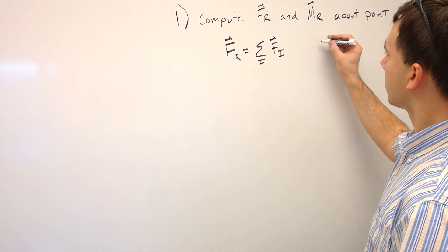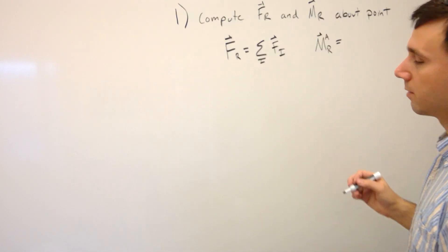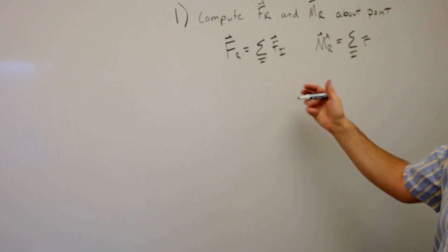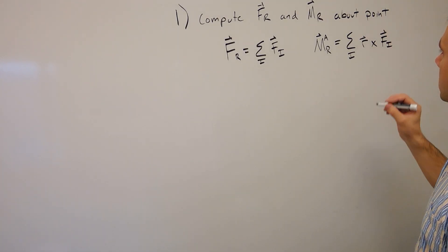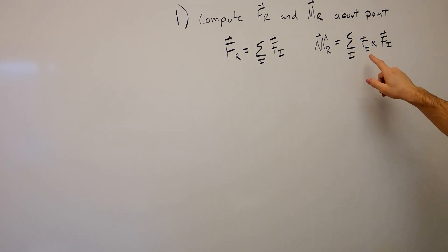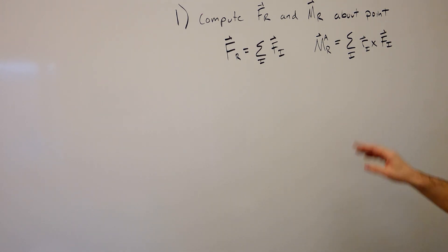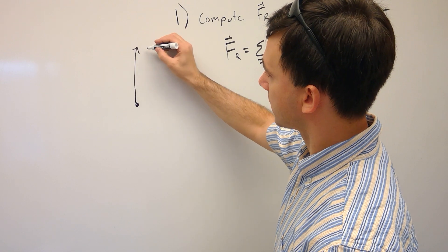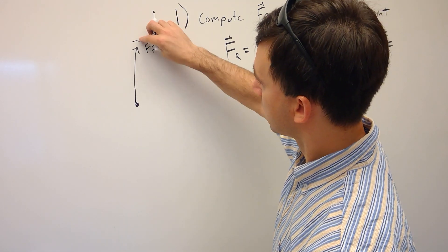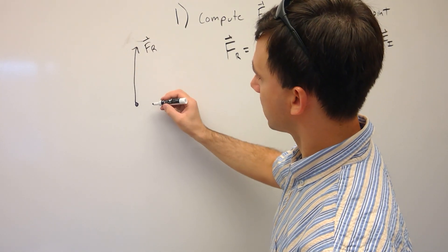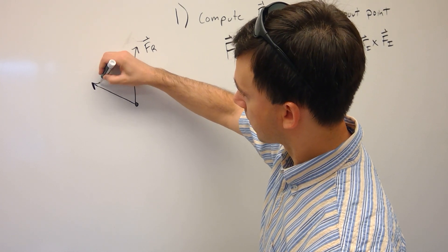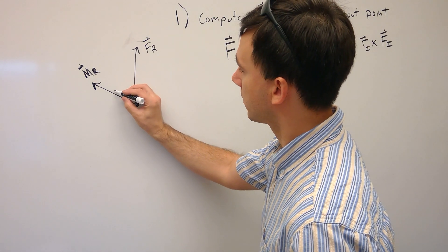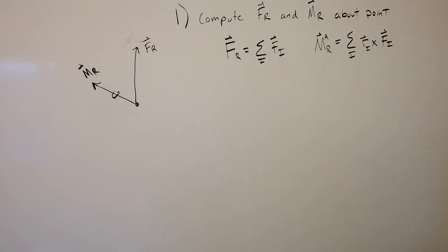The resultant moment about some point A is equal to the sum of a vector from point A to the line of action of each of the forces, cross product with each of the forces themselves. So for each force, it's a vector from point A to the line of action of force i. At point A we have a resultant force and at some arbitrary orientation we have the resultant moment. That's step one.